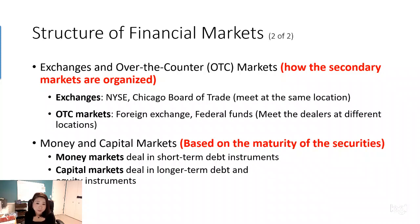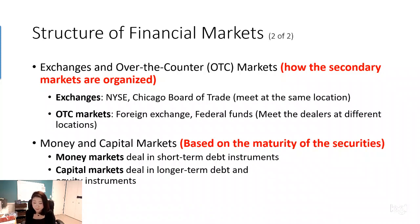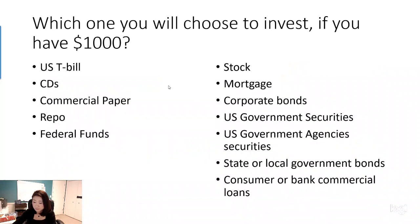The third way to look at financial market structure is based on the maturity of the security: the money market and the capital market. In the money market, we deal with short-term debt instruments that mature within one year. In the capital market, we deal with long-term debt and also equity — the stock market. In the next video, we will look at monetary instruments and capital market instruments one by one.